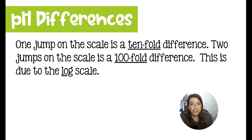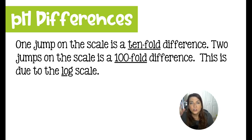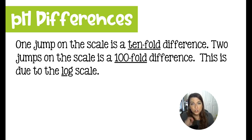Anytime you make one jump on the pH scale, we're talking about a tenfold difference — that's where the multiplying or dividing by 10 really comes in. A pH of 2 is 10 times more acidic than a pH of 3. Two jumps is two tenfold differences, which would be a 100-fold difference. So if you had pH 2 and pH 4, the pH of 2 is 100 times more acidic than 4 because it's two jumps on the pH scale.